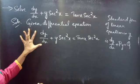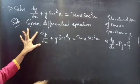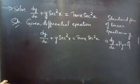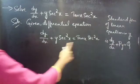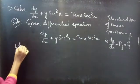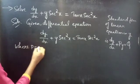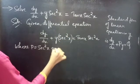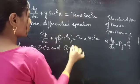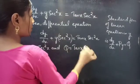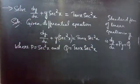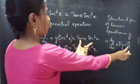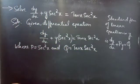So we can say that the given equation is in linear equation in y form, or the standard form of linear equation in y. By comparing these two, we get P equals sec²x and Q equals tan x·sec²x, where P and Q are functions of x.